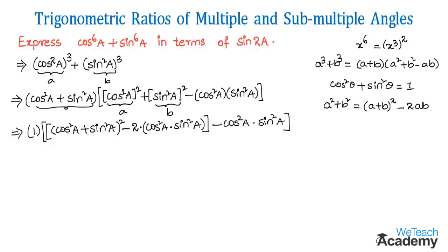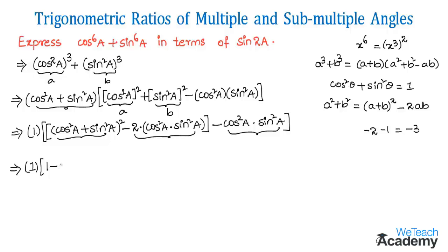There are like terms: minus 2 cos²a·sin²a and minus cos²a·sin²a, which combine as −2 − 1 = −3. The trigonometric identity gives 1, so squaring it also gives 1. Multiplying through, we get 1 minus 3·cos²a·sin²a.